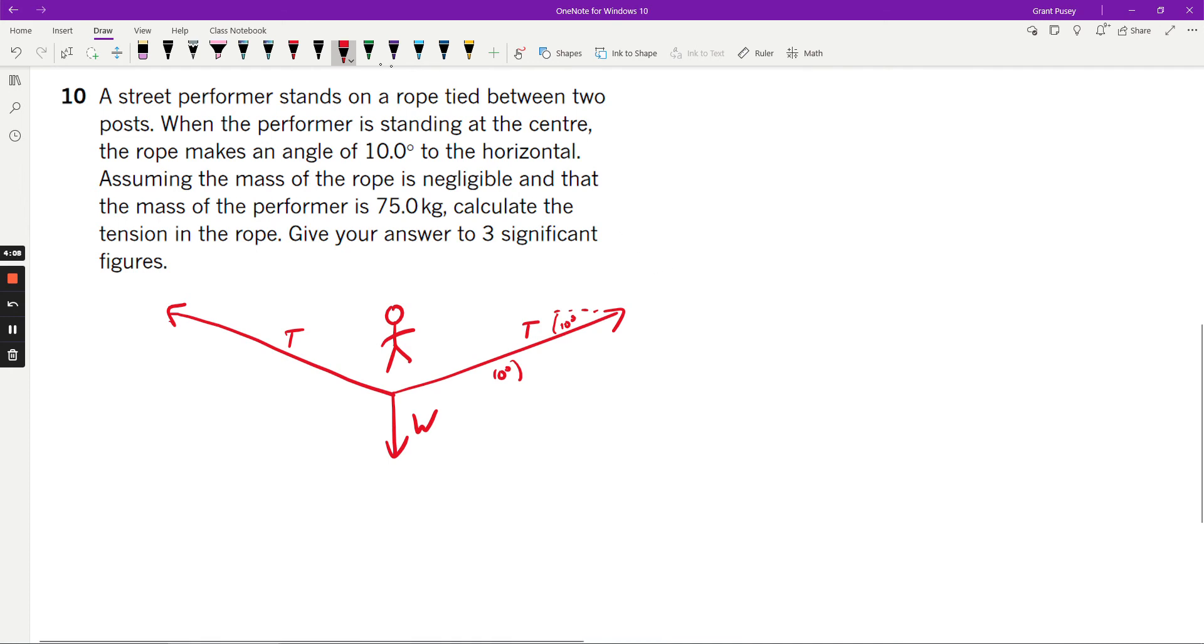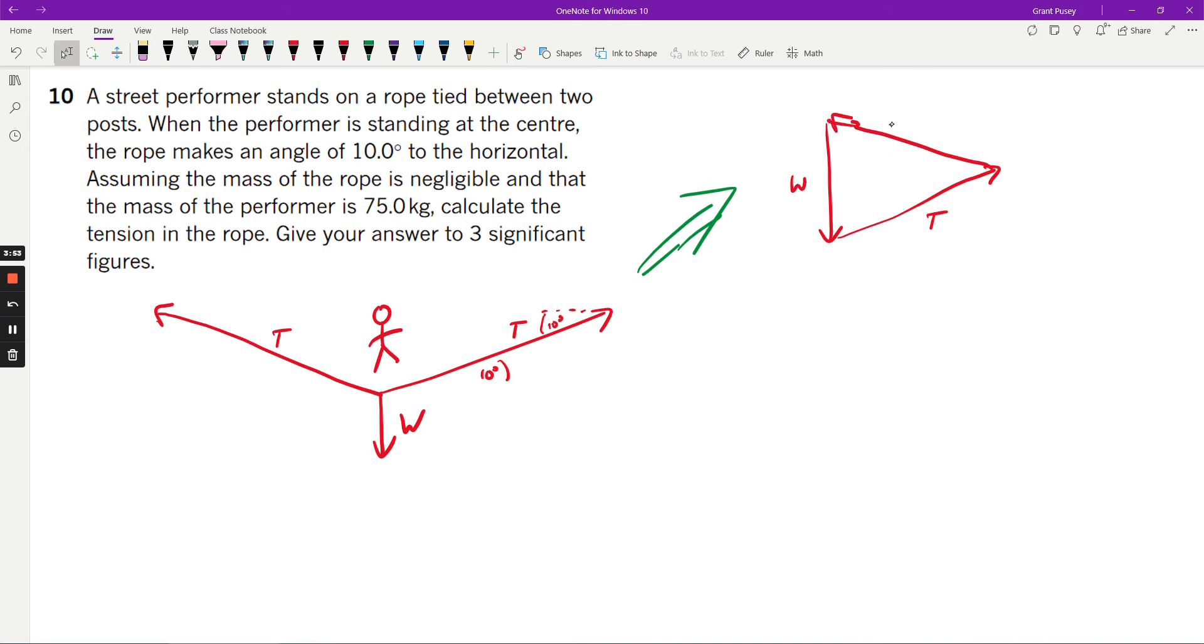So if we were to redraw this as a vector diagram, what you'd end up with is a weight force that's coming down over here, and then one side of the tensional force will be doing this and the other side will be doing that.